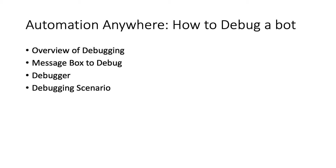The better approach to debugging, as we see typically in any programming language, is the ability to move line by line through the code and see the value at each line. Automation Anywhere provides the option to debug a bot — we have a debug view that we will be going through. It is a very helpful feature and one should always utilize it when developing and debugging a bot.